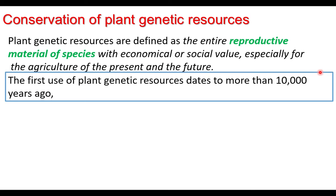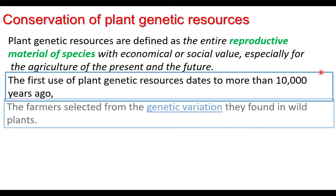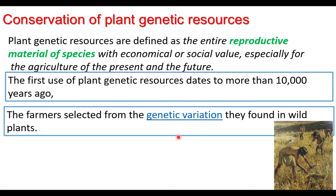The first use of genetic resources dates to more than 10,000 years ago. 10,000 years ago, humans invented agriculture. The farmers selected the genetic variation they found in wild plants — they selected a better plant from the group of wild plants.